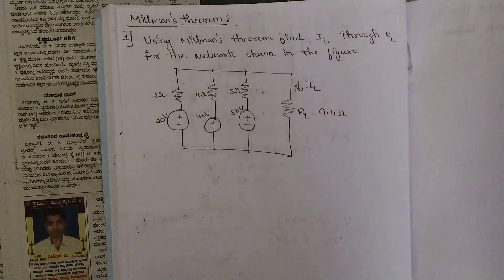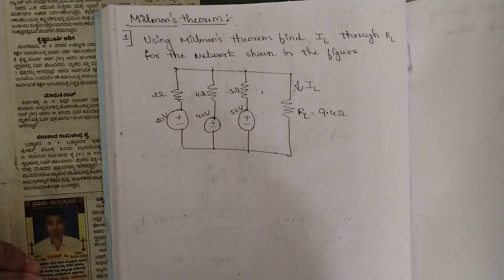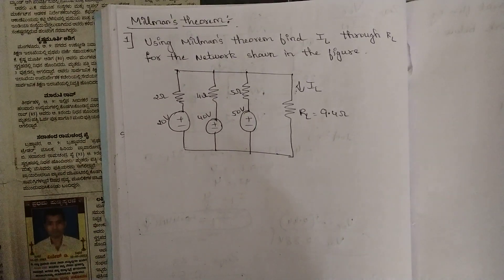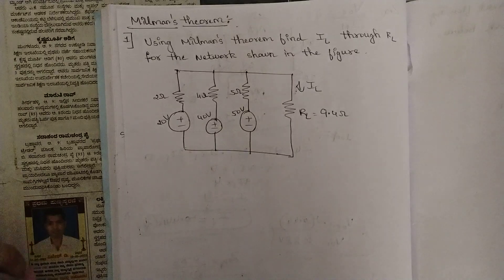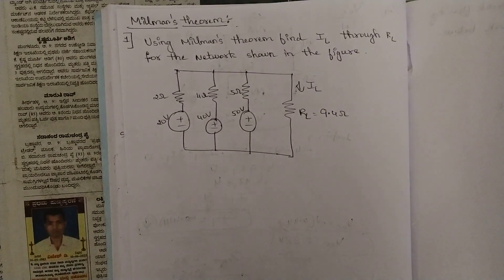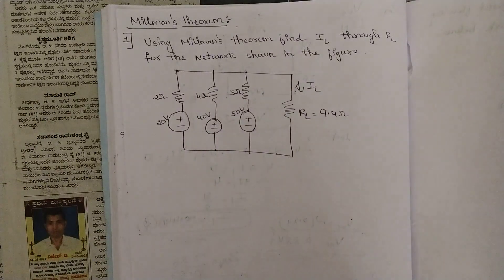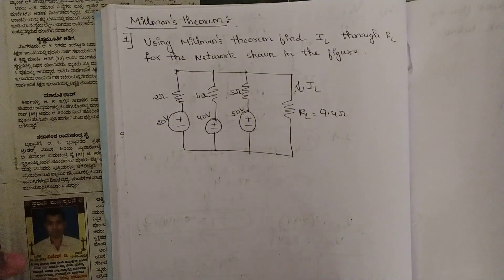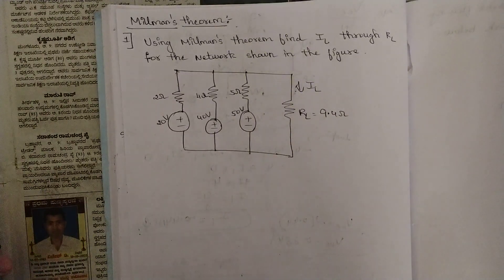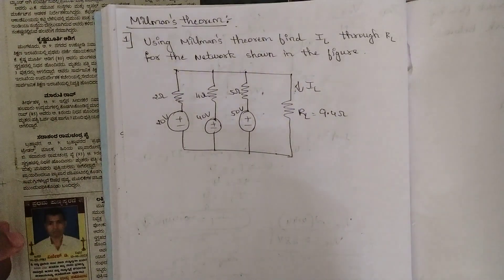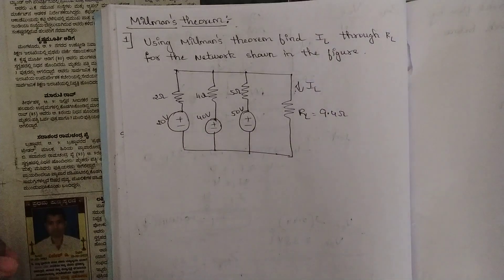Hello everyone, welcome to this new video. In the previous video we started with Millman's theorem and I explained the whole theorem in a very brief manner. It's a very easy theorem, worth six to seven marks — the statement along with the proof. Millman's theorem is the easiest theorem in the network theorem module, and the problems are also very simple. You just substitute values into the formula and get the answer.